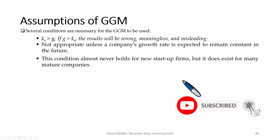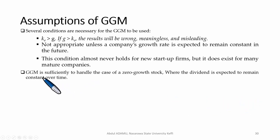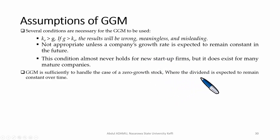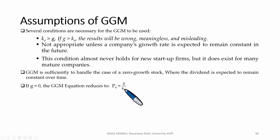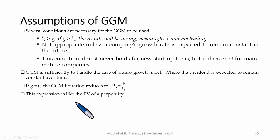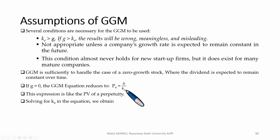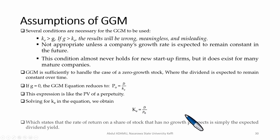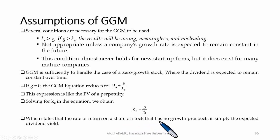However, the Gordon Growth Model does apply to many mature companies. The model is also sufficient to handle the case of a zero growth rate. If G equals zero, the formula becomes: P₀ = Dividend / Ke. This is like the present value of a perpetuity for dividends. And if you solve for the required rate of return, Ke equals the dividend yield — meaning the rate of return on a stock with no growth prospects is simply the expected dividend yield.